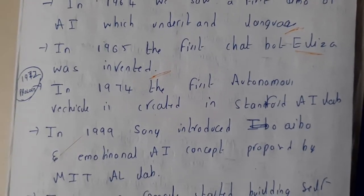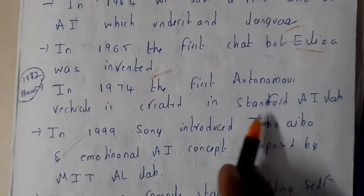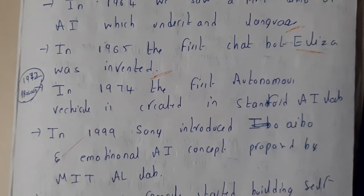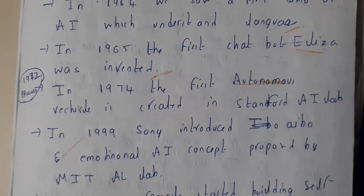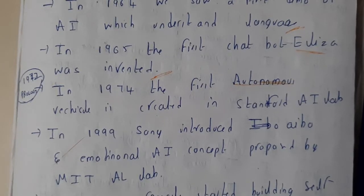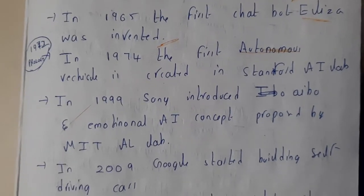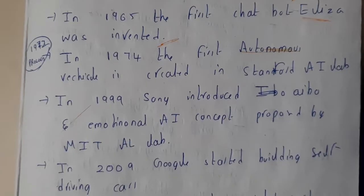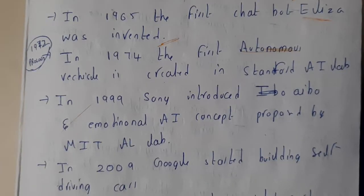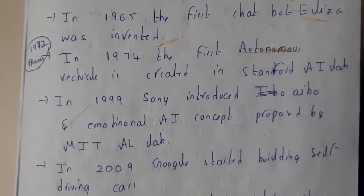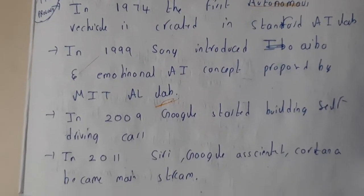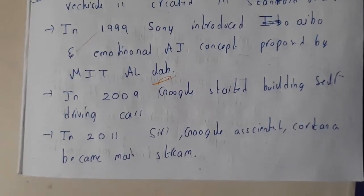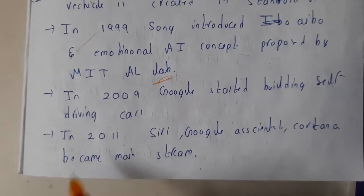In 1974, the first automated vehicle was created at Stanford AI Lab. In 1999, Sony introduced AIBO — a popular robotic pet. That same year, emotional AI concepts were proposed by MIT Lab, so even emotional concepts came into play in 1999.